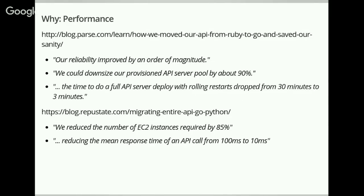I have two blog posts quoted here. One is from Parse.com, the company that Facebook bought, which does some cloud backend stuff. The other use case is RepuState, which does some form of text analysis provided by an API. The common thing when you read those blog posts is that basically all of them report a great performance improvement — even in order of magnitude. They could reduce their resources by 90%, and deploying became easier because in Go you have static binaries.